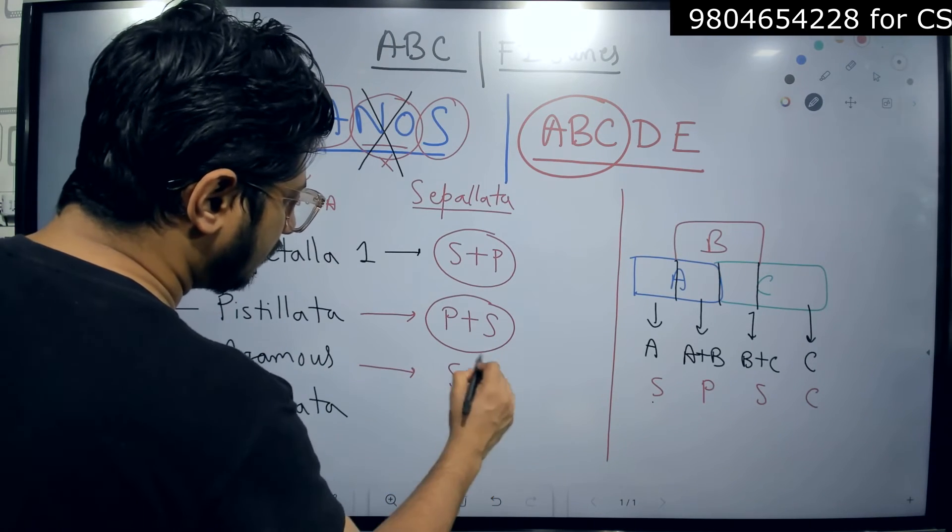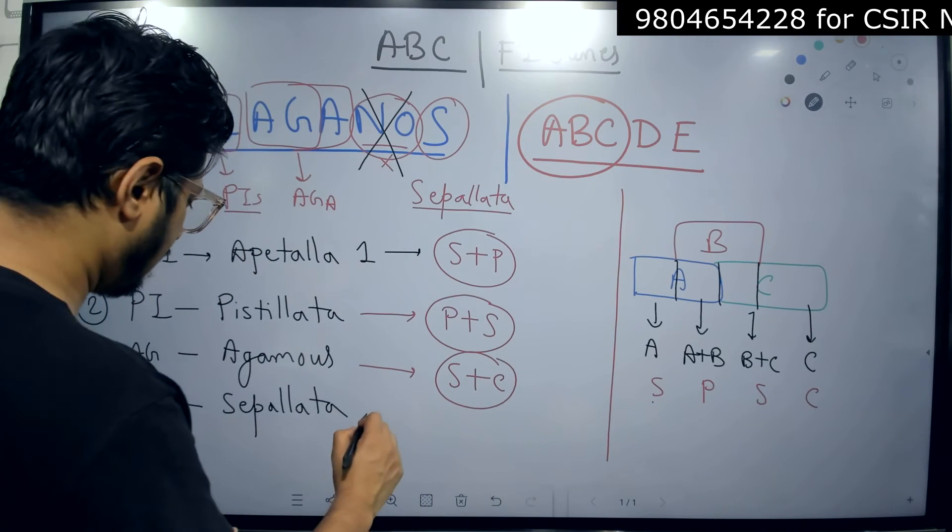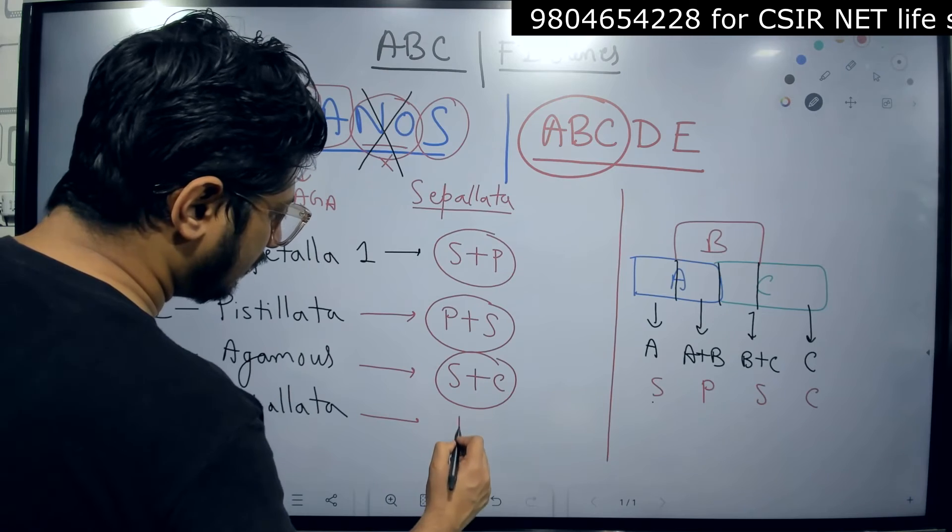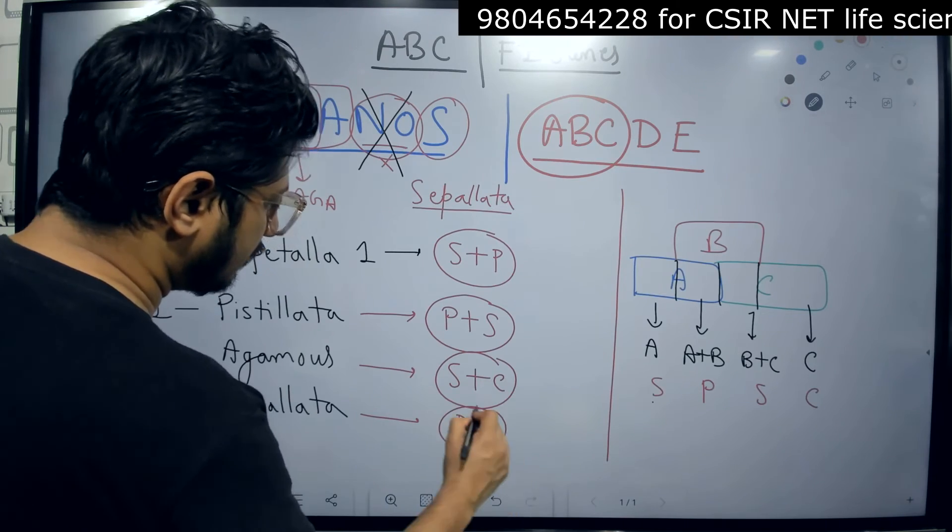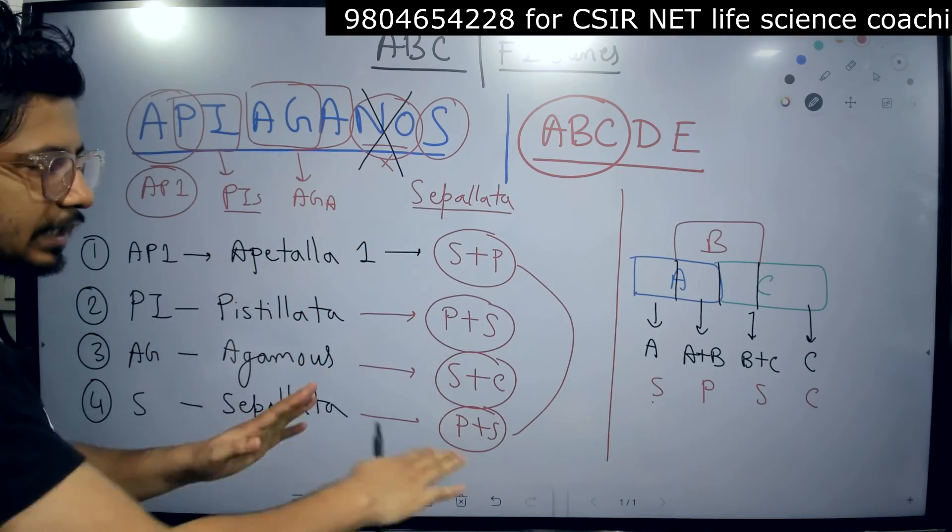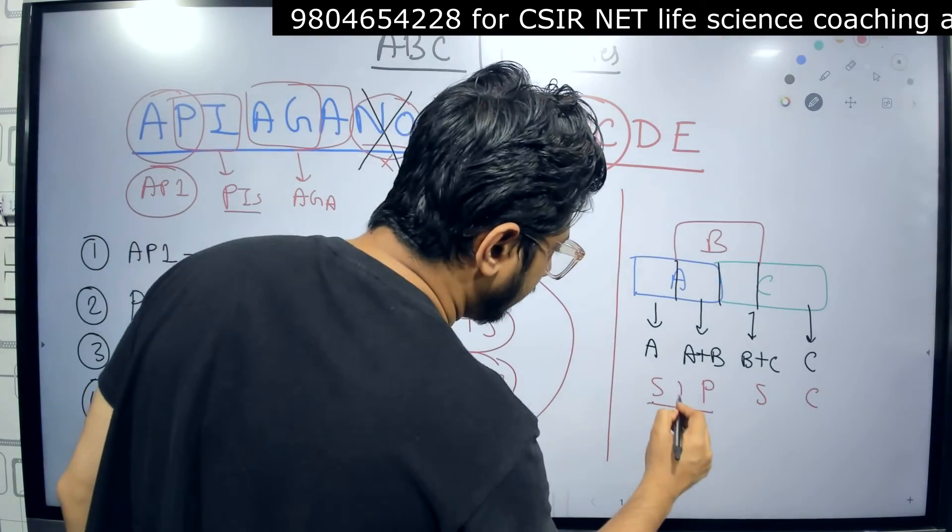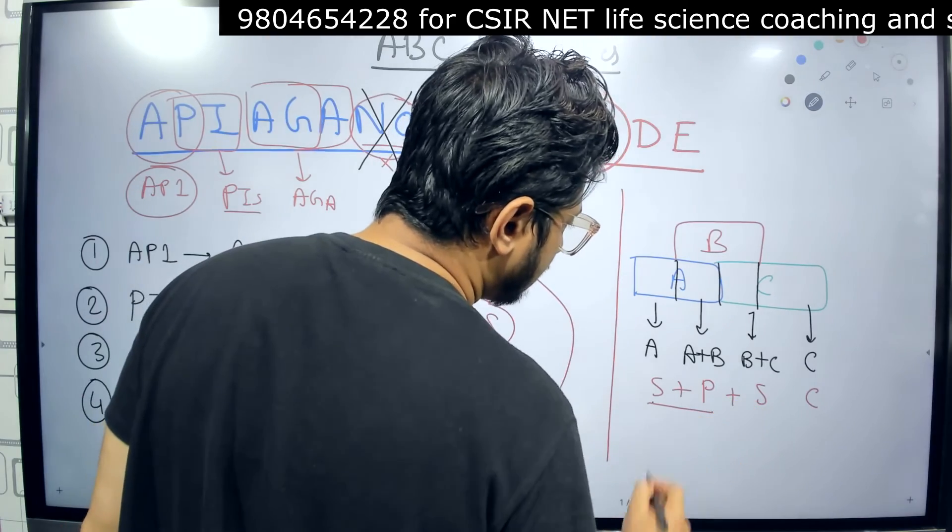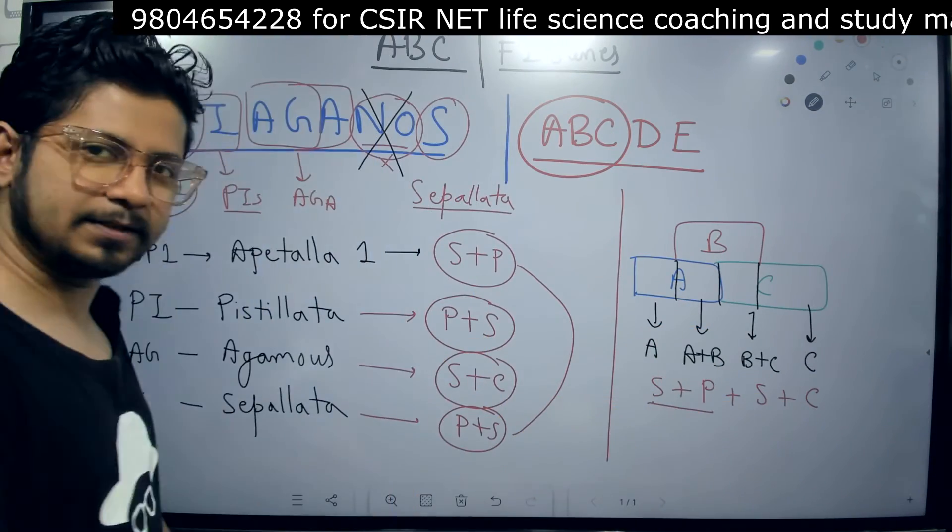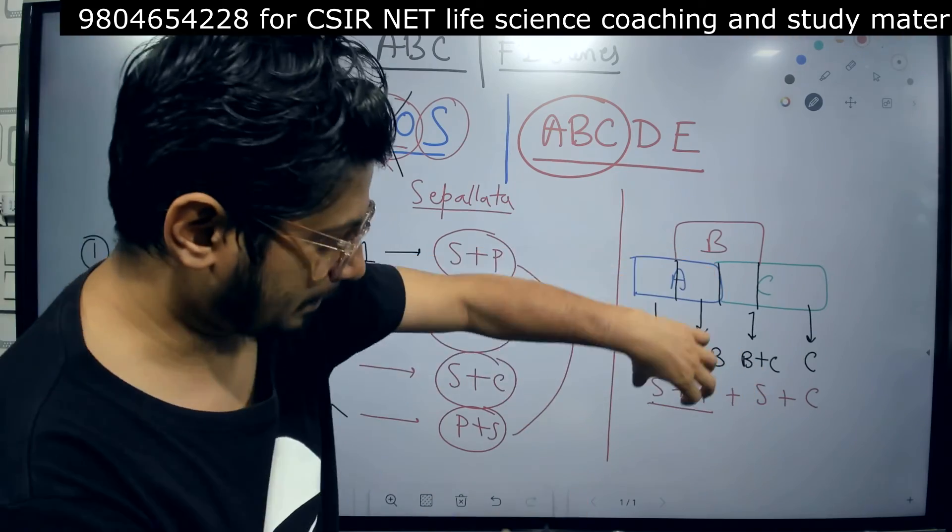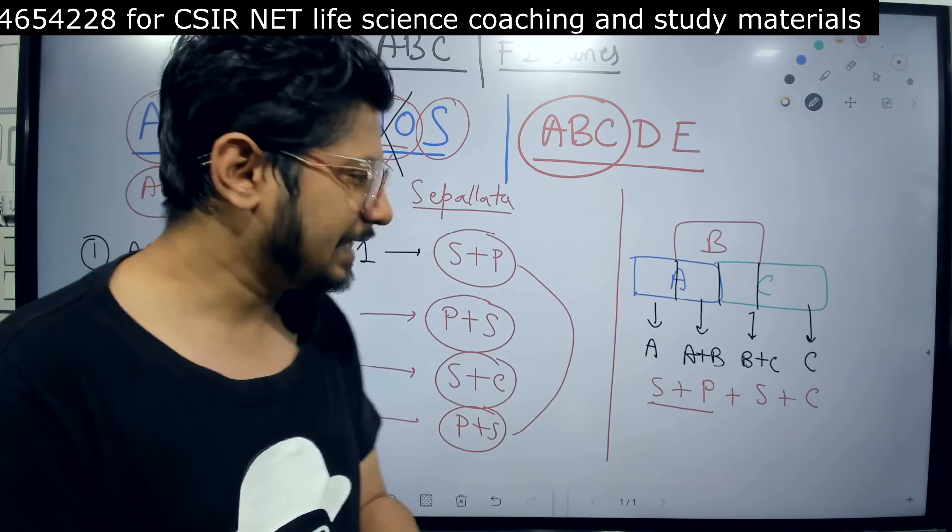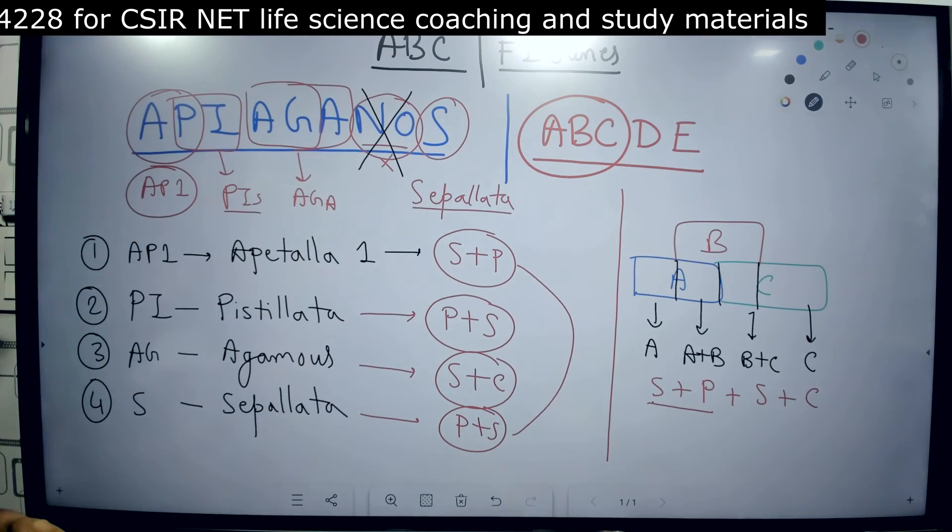Agamos is responsible for stamen and carpel. Then Sepallata responsible for again sepal and petal. Both are similar. And how to remember this? S plus P, P plus S, S plus C, and last again S plus P. Same combination: S plus P, the next one P plus S, the next one S plus C, the last one again P plus S. This is how easy it is to arrange and remember.